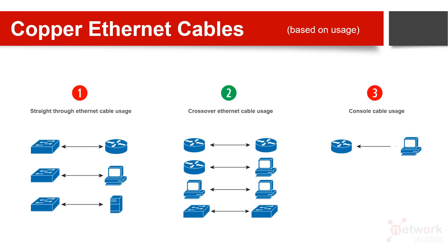The first type of copper ethernet cable is called a straight-through cable. The second type is called a crossover cable, and the third is a special type called a console cable.